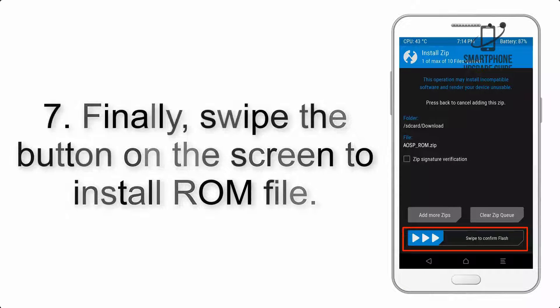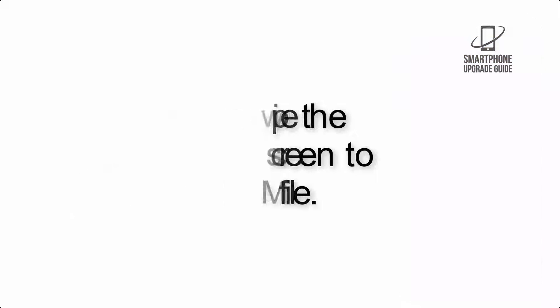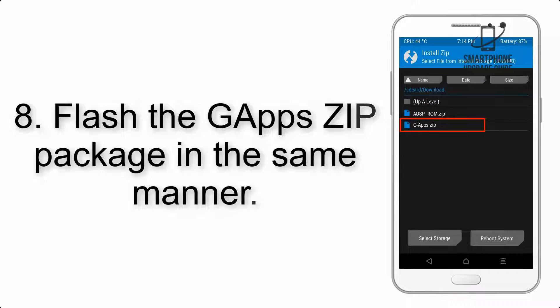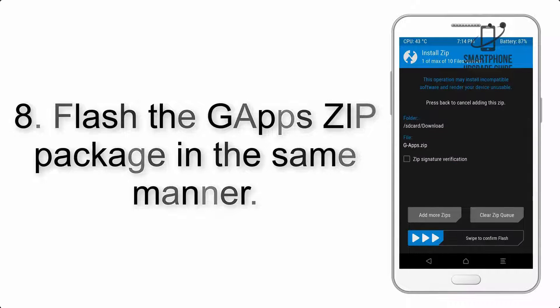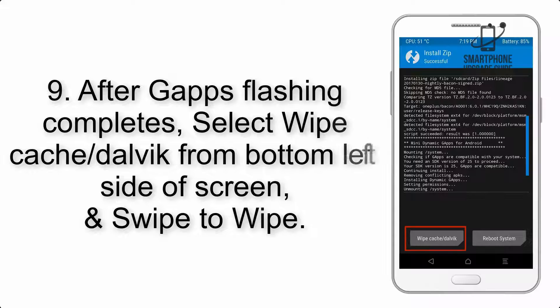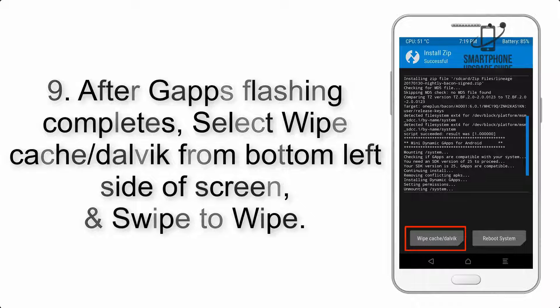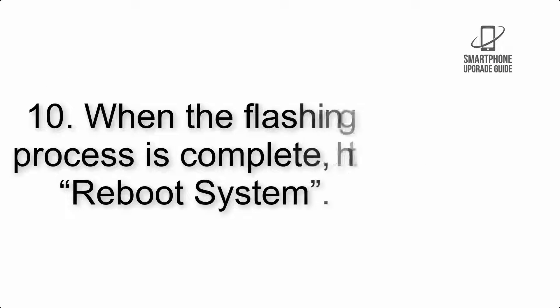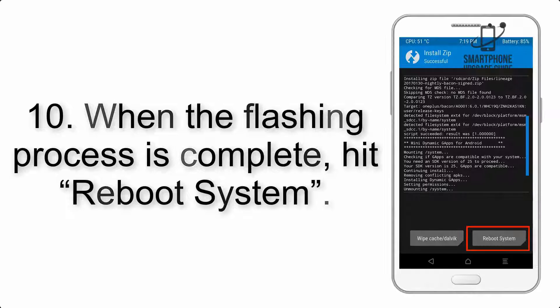Step 7: finally swipe the button on the screen to install the ROM file. Step 8: flash the GApps zip package in the same manner. Step 9: after GApps flashing completes, select Wipe Cache and Dalvik from the bottom left side of the screen and swipe to wipe.